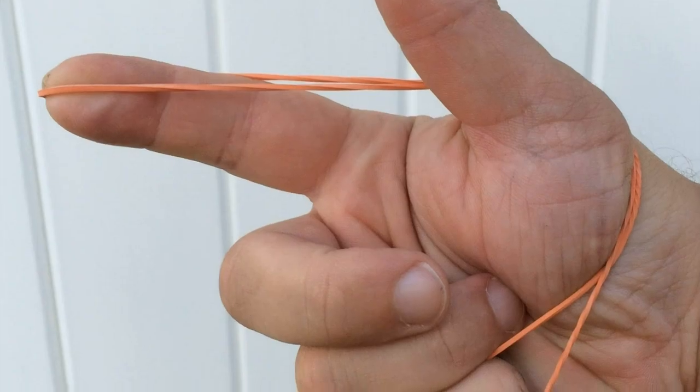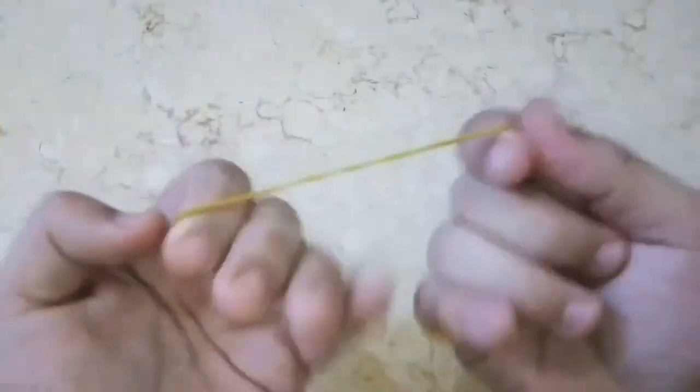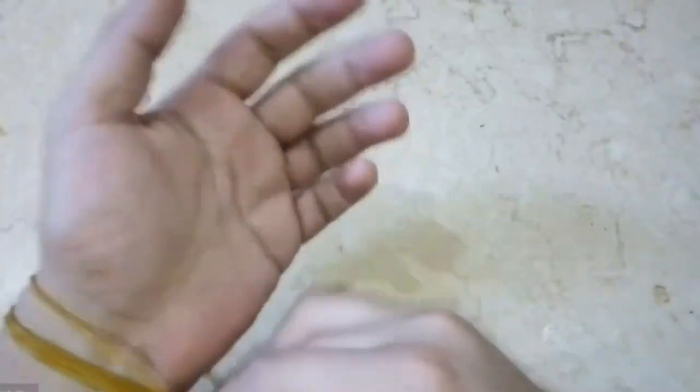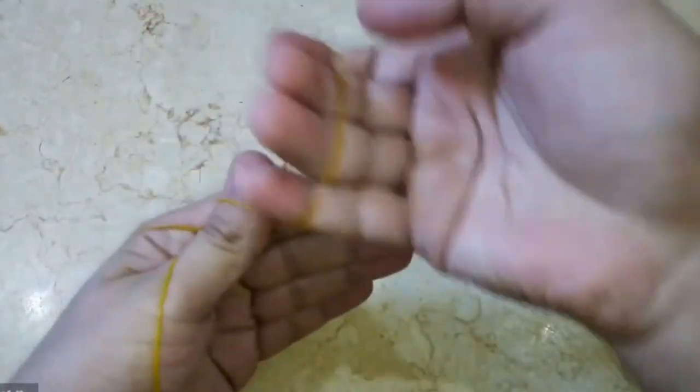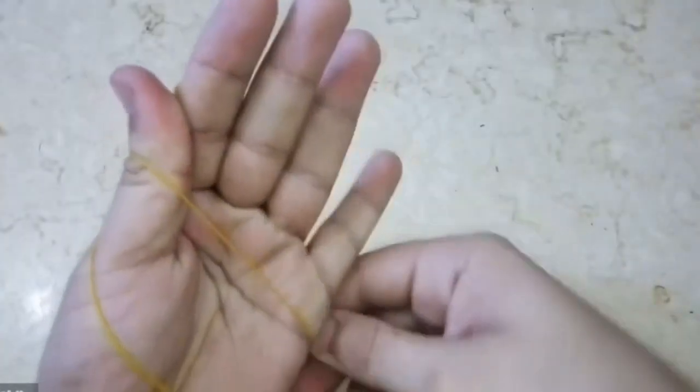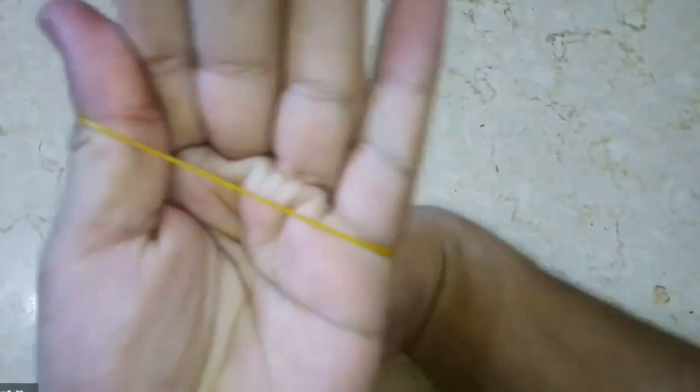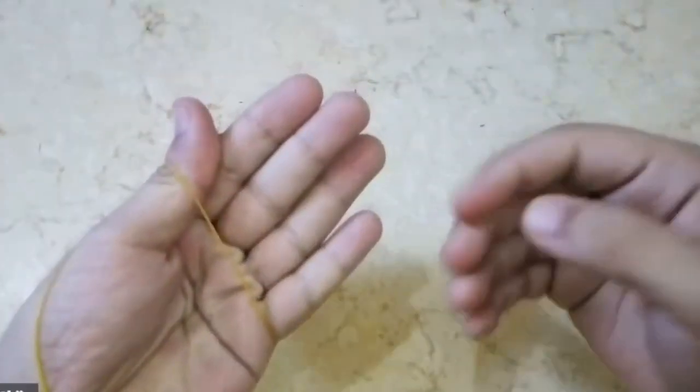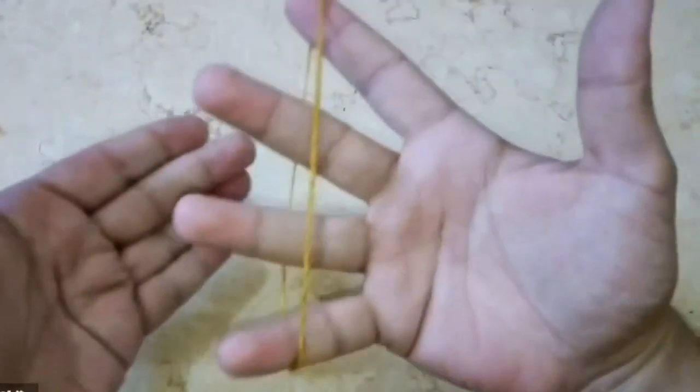As the second hand approaches the rubber band, the magician secretly slips the band between the fingers of their other hand. The magician continues to lower their second hand until it comes into contact with the rubber band, giving the illusion that the band is now connecting both palms. To enhance the effect, the magician may wiggle their fingers or move their hands around to make it seem as if the rubber band is securely attached. When the magician wishes to release the rubber band, they simply reverse the process by lifting their second hand away, allowing the band to slip out from between their fingers.